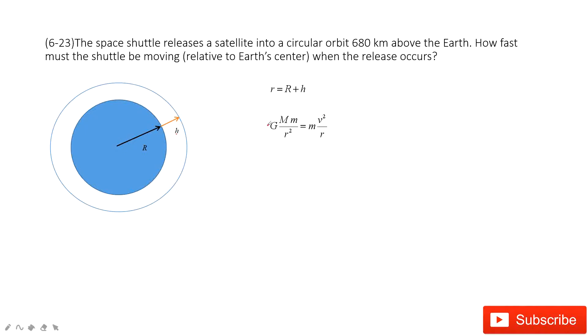And the gravitational force is G, the mass of the Earth capital M, times the mass m, divided by r squared. In this one, we can get the velocity: v squared equals GM divided by r, where r is capital R plus h.